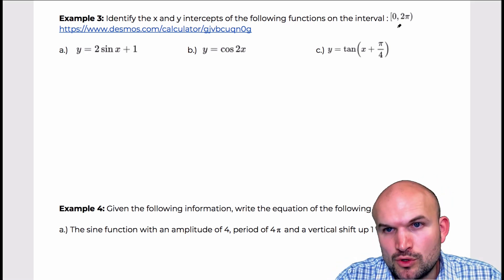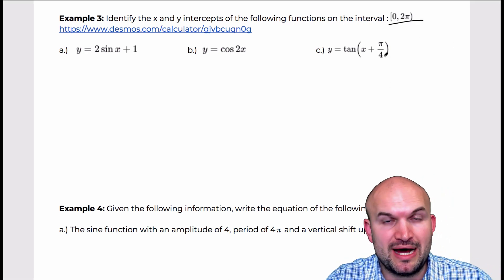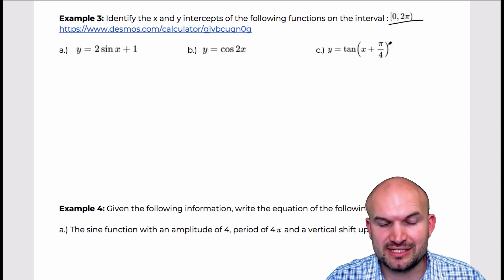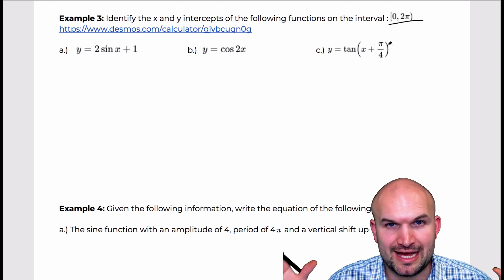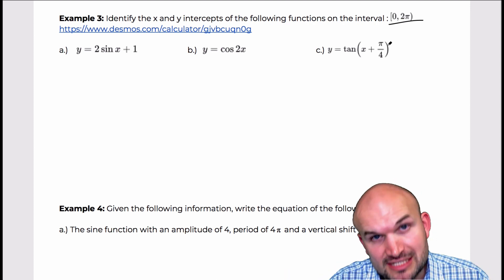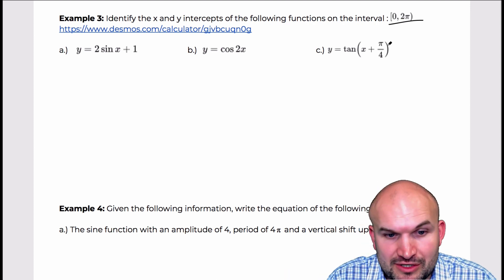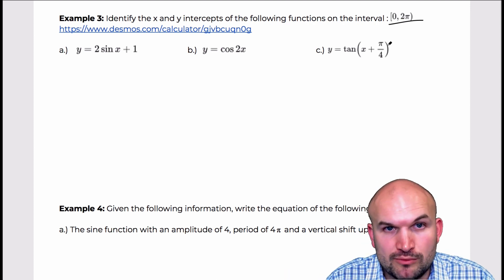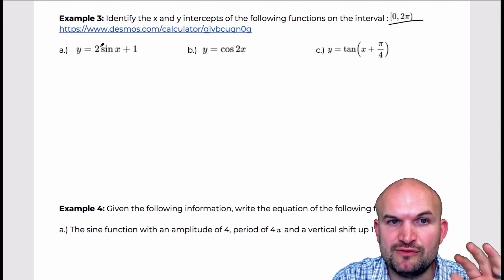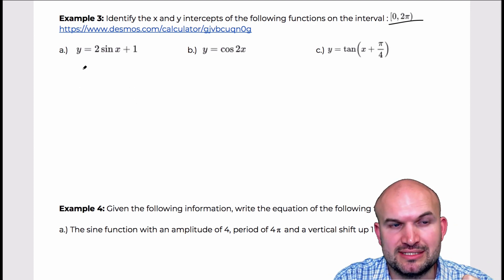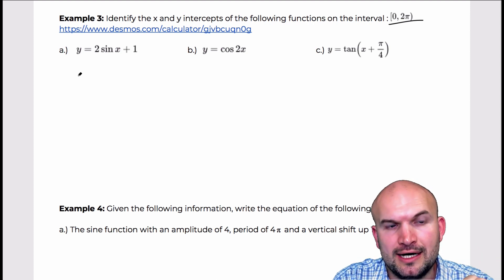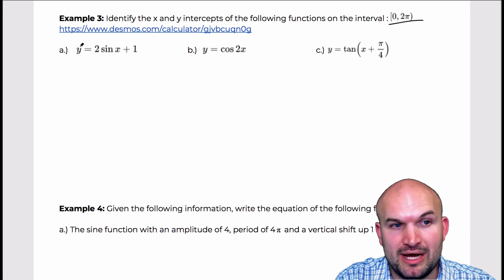The important thing is we're only looking on the interval of 0 to 2π, which is basically like the revolution of the unit circle. Obviously, if we go beyond that, we're going to have repetitions of all the x-intercepts. The y-intercept is going to occur where it's going to occur. So let's review what we want to look for when identifying the values for the x and y intercepts.